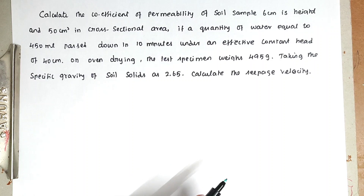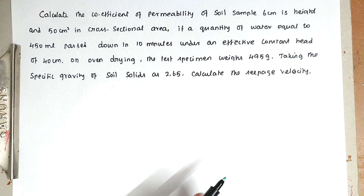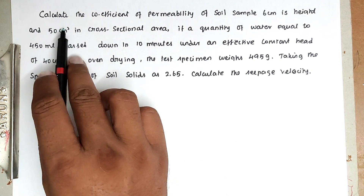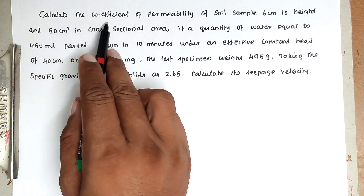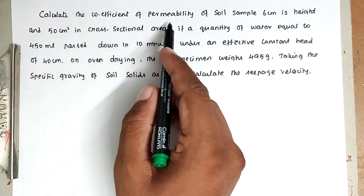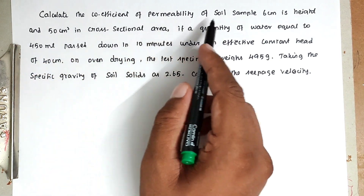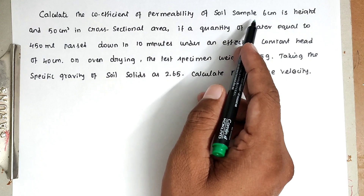Hello friends, welcome to Civil Engineering Exam. Today we're going to see a problem related to soil mechanics in the topic of permeability — specifically the constant head method. The problem is to calculate the coefficient of permeability of a soil sample.